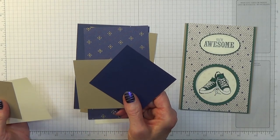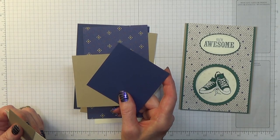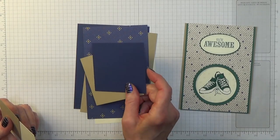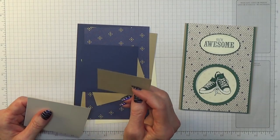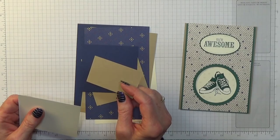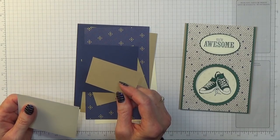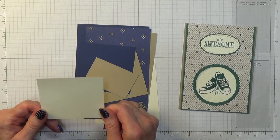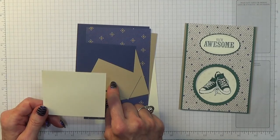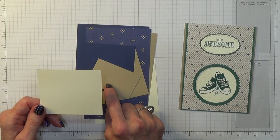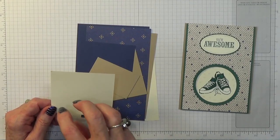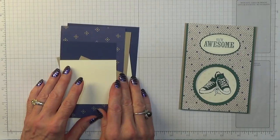Then a piece of Crumb Cake and a piece of Night of Navy, both which measure 3 1/4 inches by 3 1/4 inches, which is approximately 8 by 8 centimeters. A piece of Crumb Cake which is 1 3/4 inches by 3 3/4 inches, which is 4.4 by 7 centimeters. And a piece of Very Vanilla which is at least 1 3/4 inches by 2 3/4 inches, which is 4.4 by 7 centimeters. Because I'm stamping on here and it's die-cutting, I have allowed myself a bit more.